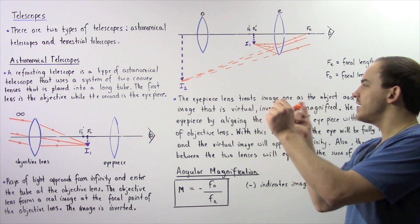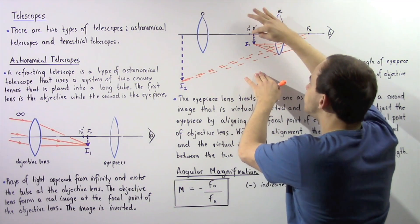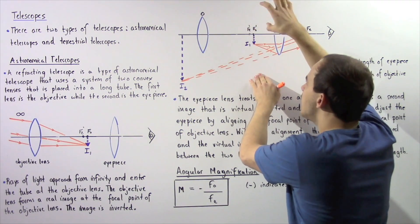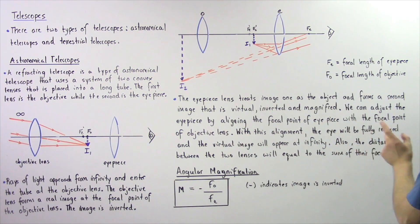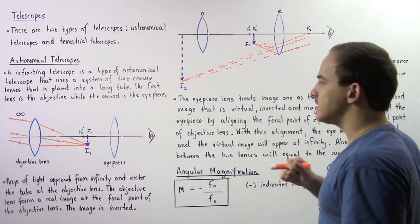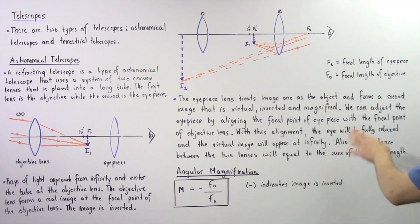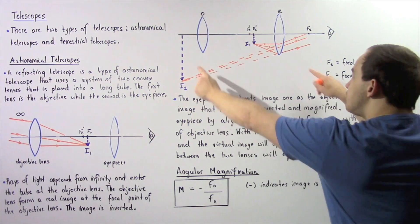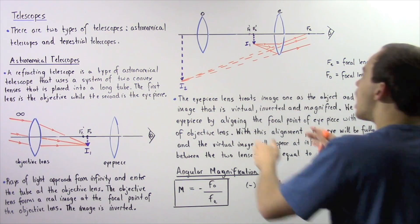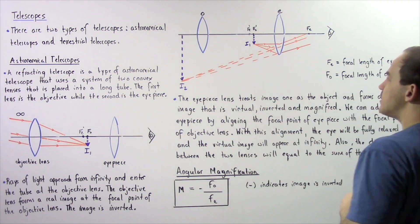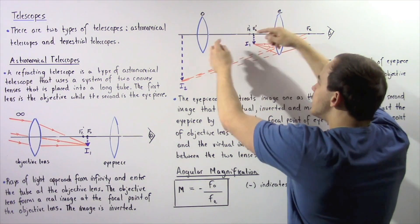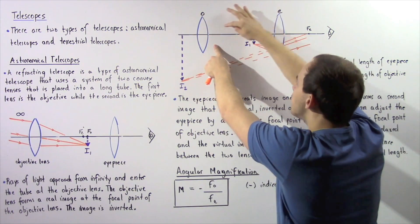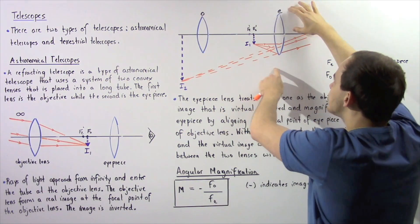We can adjust this distance so that the focal point of the objective is equal to the focal point of the eyepiece — these two points essentially align. With this alignment, the eye will be fully relaxed and the virtual image will appear infinitely far away, meaning it will appear very large. At this particular position, the distance between the two lenses equals the sum of the focal length of the objective lens and the focal length of the eyepiece: FO + FE.